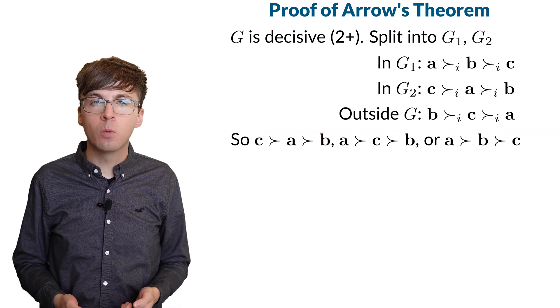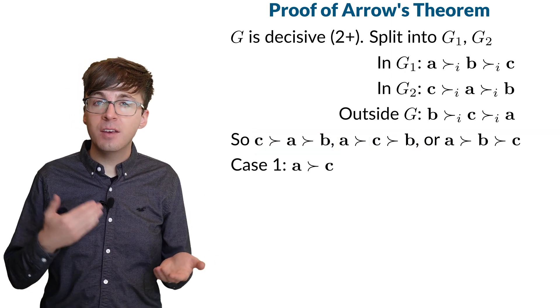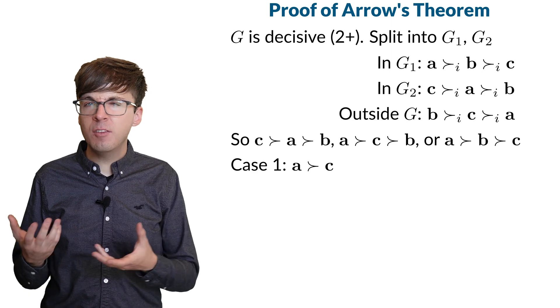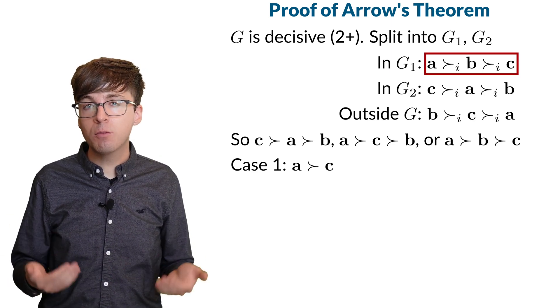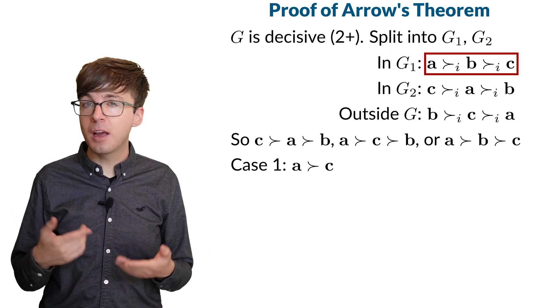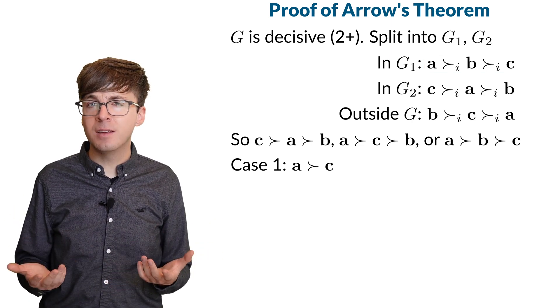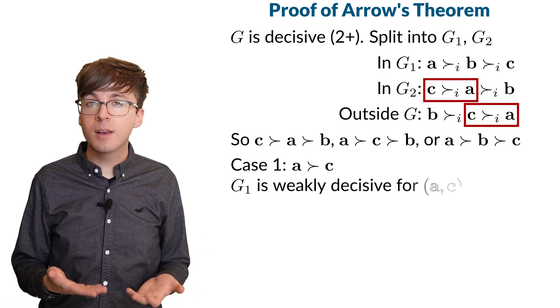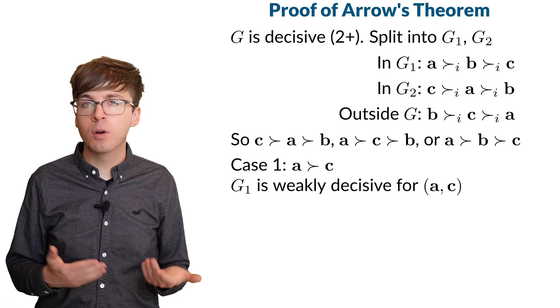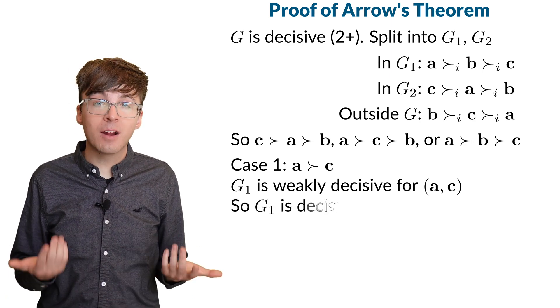Let's consider these cases one at a time. If A is above C, then let's check what's happening with G1. In G1, everyone ranked A above C. Notice that the other two groups ranked A and C the opposite way, C over A. So this means G1 is weakly decisive for AC.